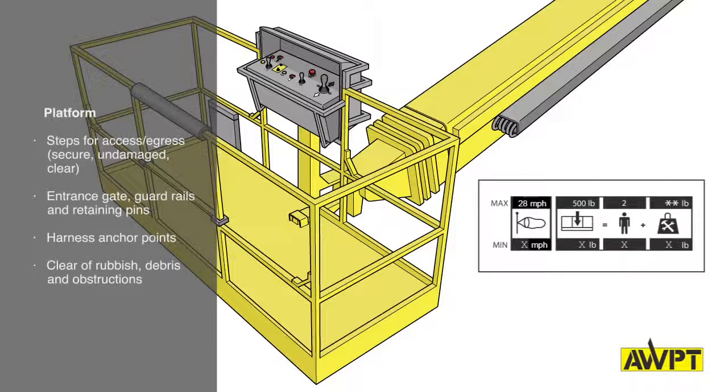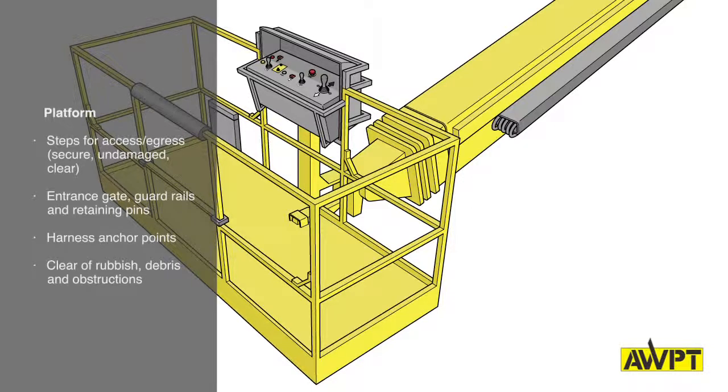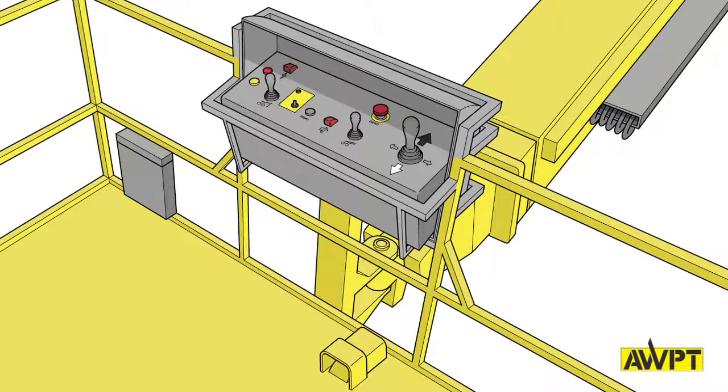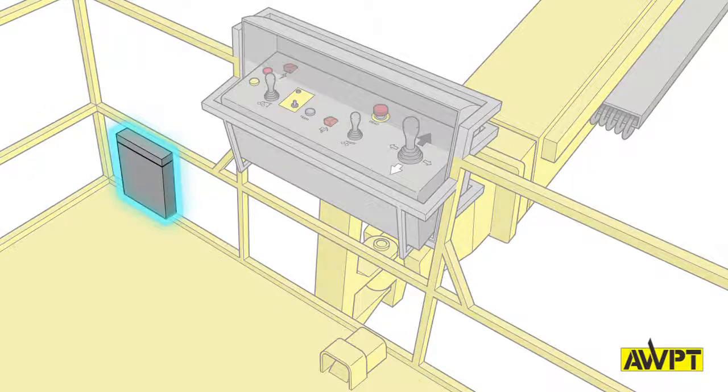Make sure that any gate opens either inwards or lifts up and that the gate or opening closes securely and has not been tied open. Remember not to forget to check the black box. This is the machine's document holder where you'll find the manual of responsibilities and the operator's manual.